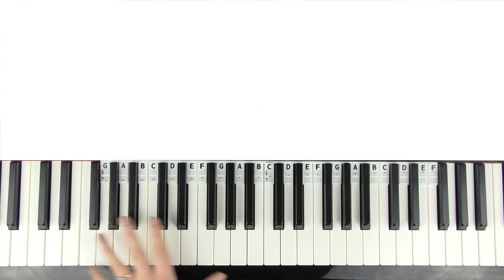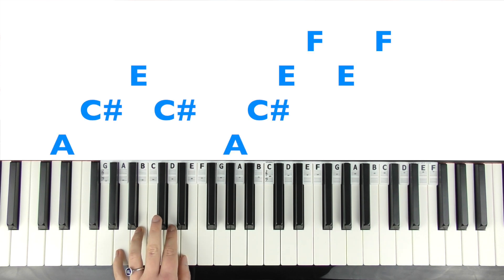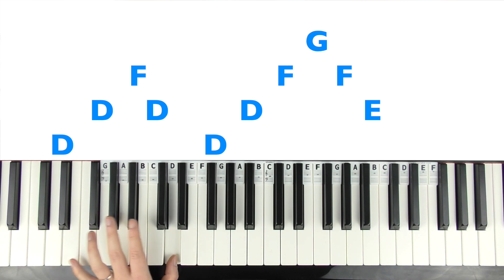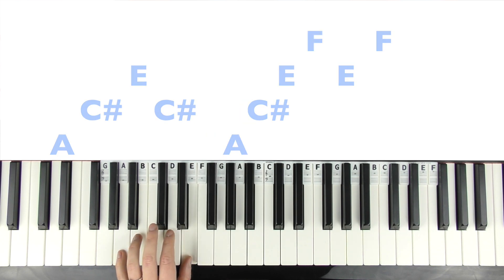Ready for this next bit. So that was based around a D minor shape. Now this next bit is based around A major. So the next bit goes A, C sharp, E, C sharp, A, C sharp, and then we have E, F, E, F. Let's do that again. Back to the D. Back to the D.